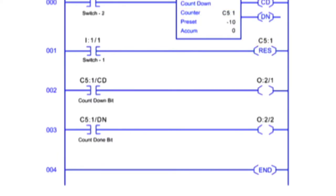The count down instruction, or CTD, works the opposite way of the CTU by counting true to false rung transitions. When rung conditions for a CTD instruction have made a true to false transition, the count down enable bit is energized and the accumulated value is decremented by one count.